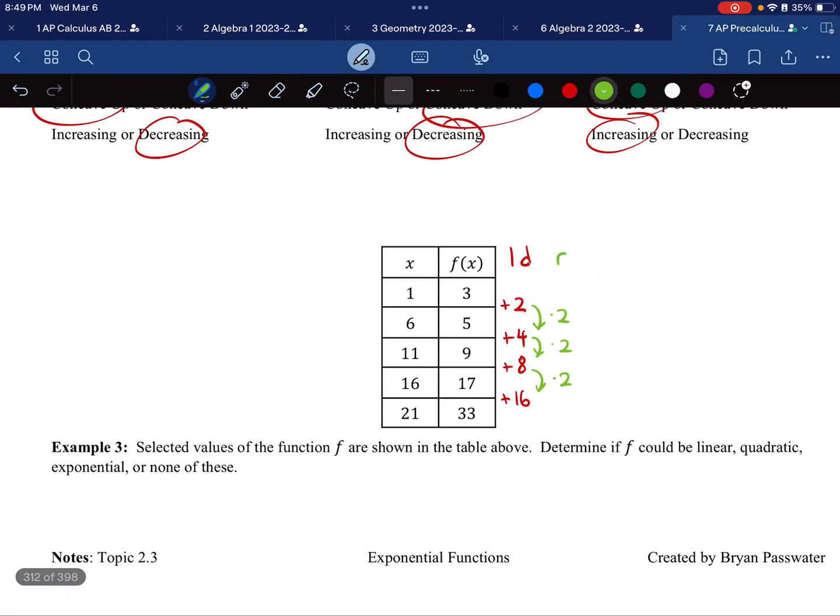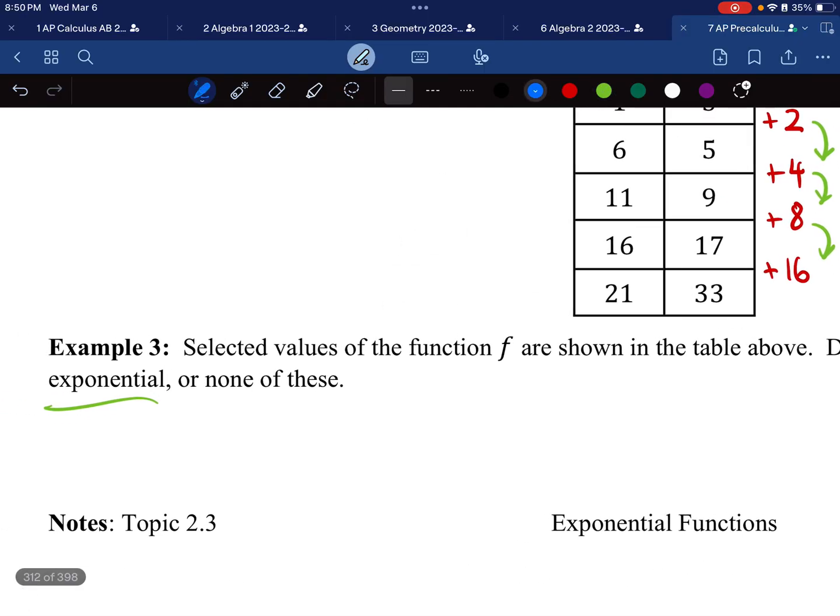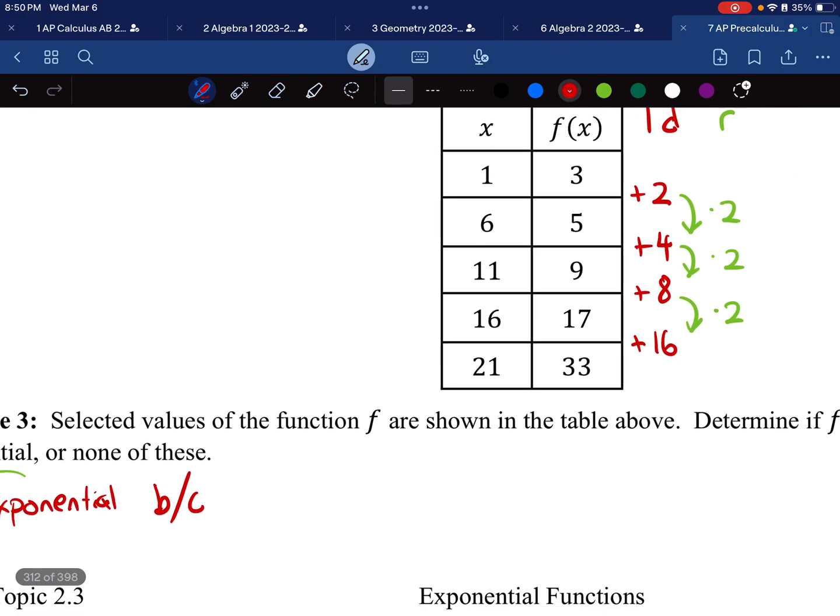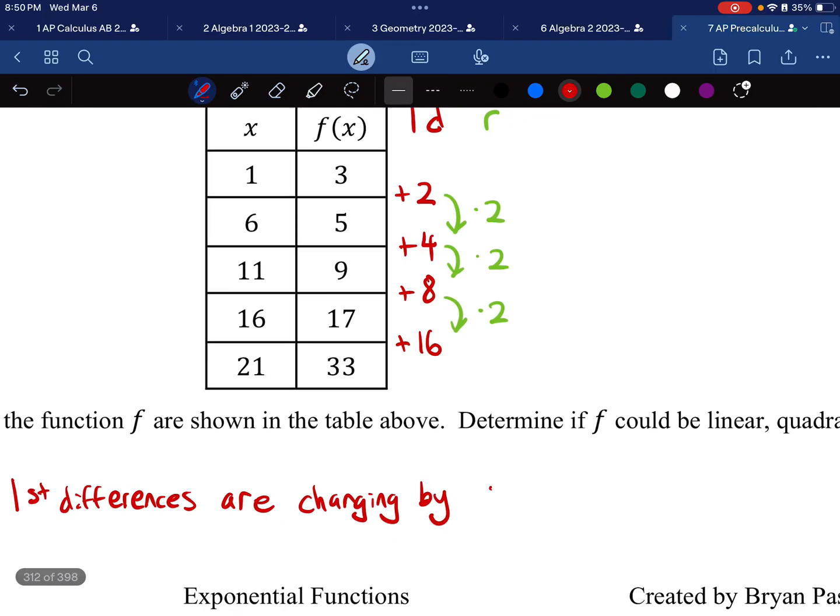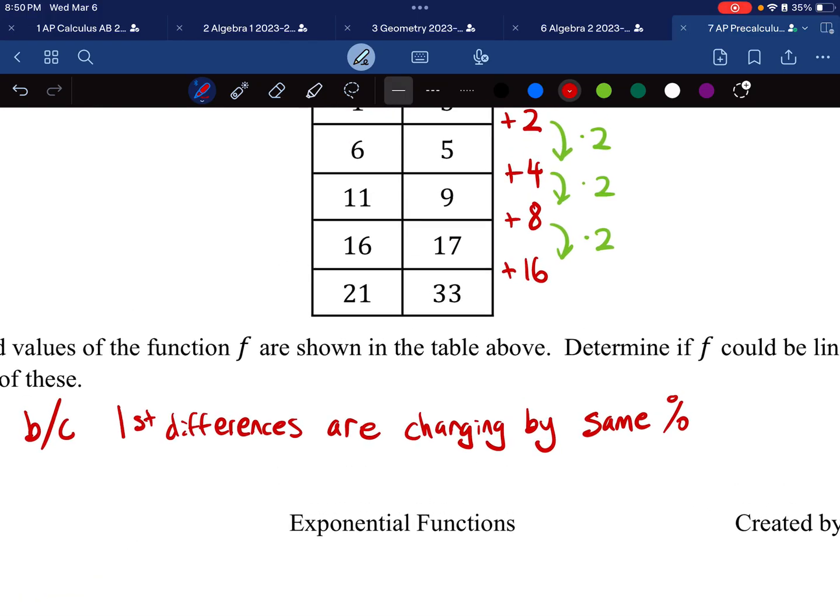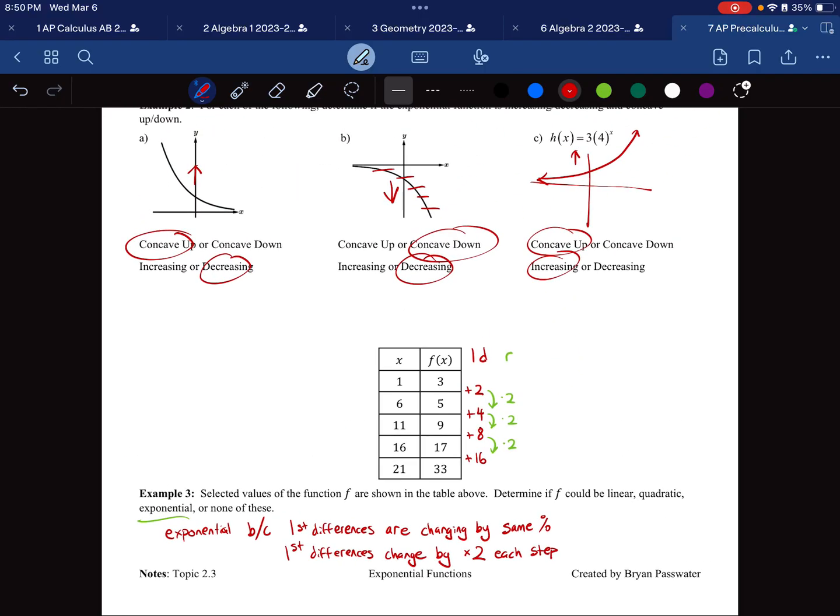You can look at that common ratio any time that you want, and any time that common ratio is the same for any of these common differences, then it's going to be exponential. So, over here, this is exponential. And our rationale is going to be because the first differences are changing by the same percent. I know some people might find that confusing, but I think it might be okay to say that the first differences change by multiplying by 2 each step. I'm recording this during the first year that AP Precalculus has ever been offered. So we'll see if that's true or not.